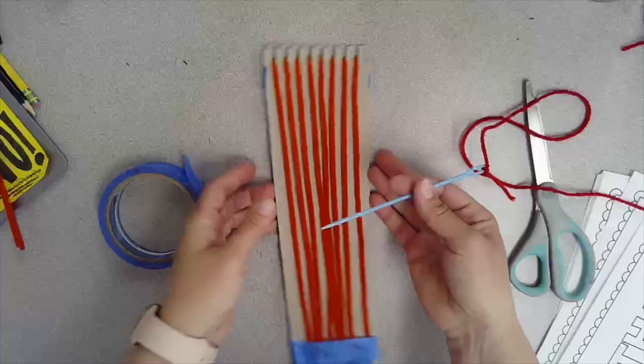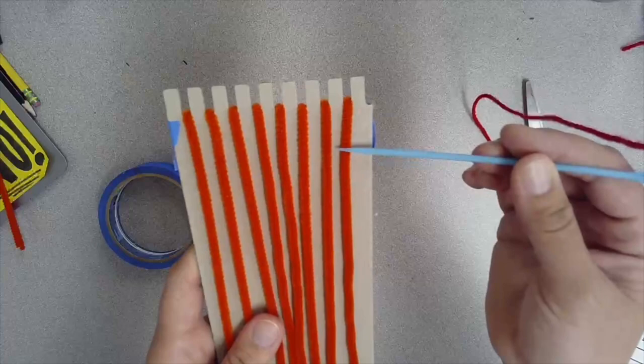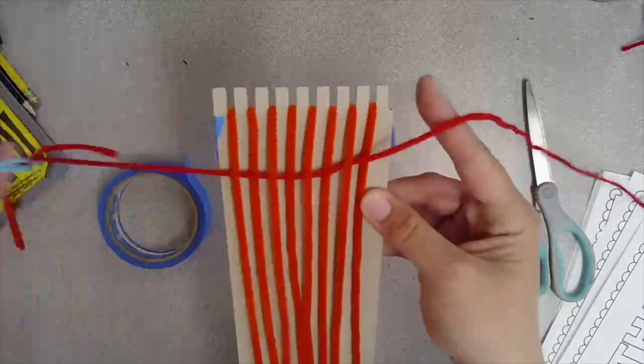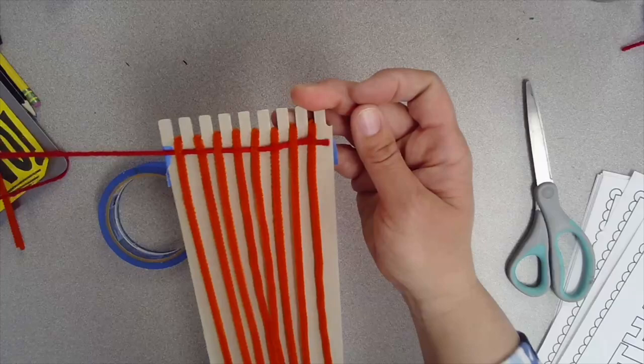Now we're going to start weaving. When you weave, you want to make a pattern of under, over, under, over, or over, under, over, under. You can start whichever way you want. You just have to remember to do the opposite each time you make a new row. When you put your needle all the way through, pull the string to the end, but leave a tiny tail sticking out the end.